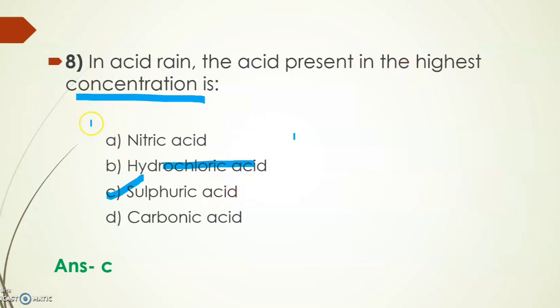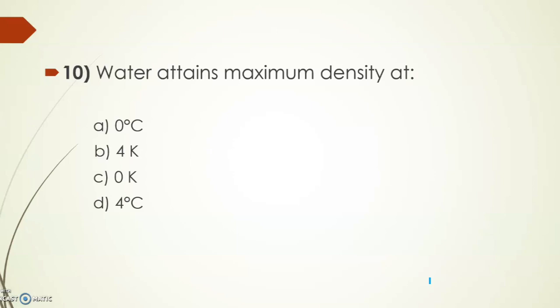Water attains maximum density at: zero degree centigrade, four kelvin, zero kelvin, or four degree centigrade. It's quite simple, its answer is option D, four degree centigrade. Water attains maximum density at four degree centigrade. You can see that we use degree with centigrade and fahrenheit, but not with kelvin. Centigrade and fahrenheit have degree, kelvin doesn't. And second thing, kelvin is our SI unit of temperature.